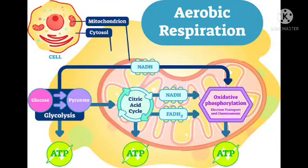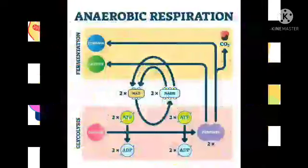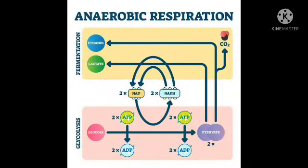Aerobic respiration takes place in the presence of oxygen. It produces more energy. The end products are carbon dioxide, water, and energy. It takes place in most organisms. In aerobic respiration, glucose is converted into pyruvate in the cytoplasm, and then in the presence of oxygen, pyruvate is converted into carbon dioxide, water, and energy in the mitochondria.